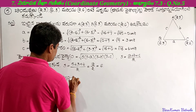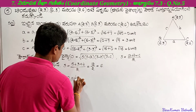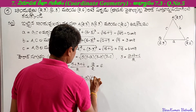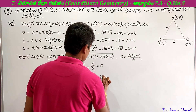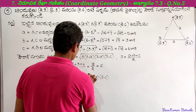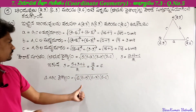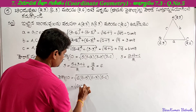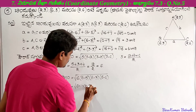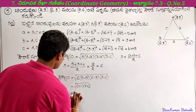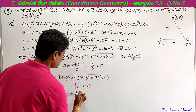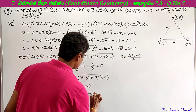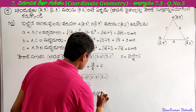Now applying Heron's formula for the area of triangle ABC: square root of S into (S minus a) into (S minus b) into (S minus c). S equals 6, S minus a equals 6 minus 5 equals 1, S minus b equals 6 minus 3 equals 3, S minus c equals 6 minus 4 equals 2. So square root of 6 into 1 into 3 into 2 equals square root of 36 equals 6 square units.